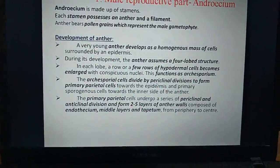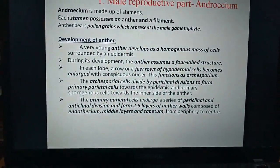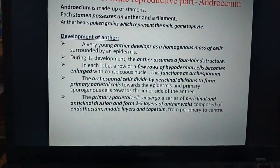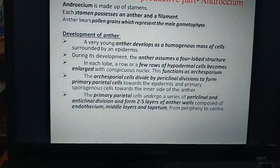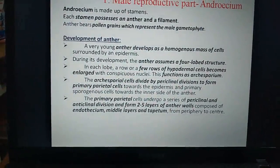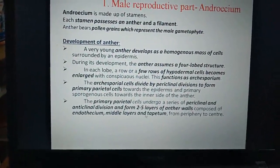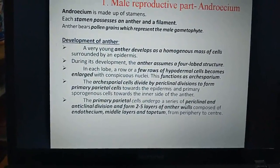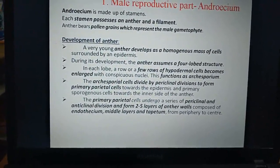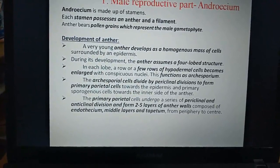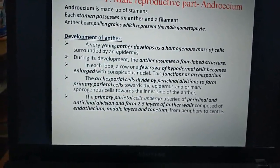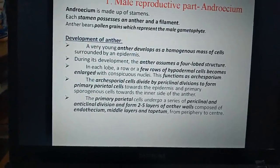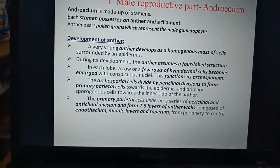Periclinal division is a vertical division. It develops parietal cells towards the epidermis and sporogenous cells towards the anther cavity. The primary parietal cells undergo a series of periclinal divisions — cells produced externally towards the epidermis undergo further divisions and form two to five layers of anther walls.